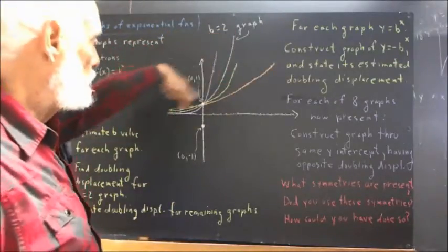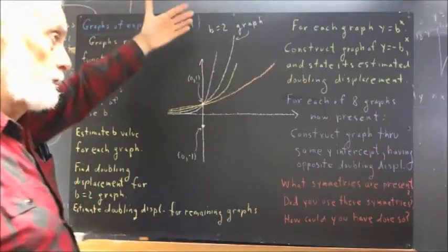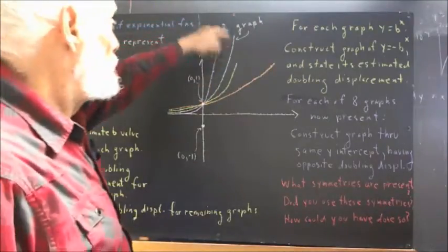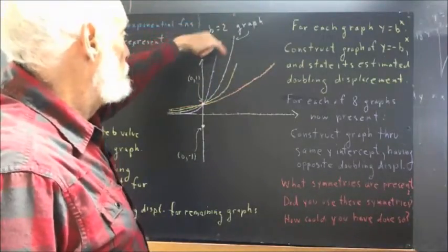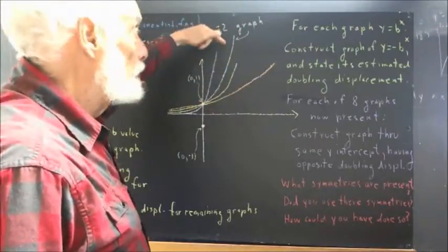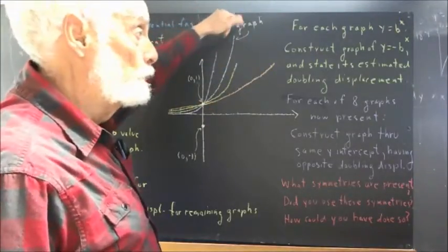Now, the white graph—and if you're colorblind, you might see more than one graph as white, but I've indicated it. This graph right here, the second highest one, is the b equals 2 graph.